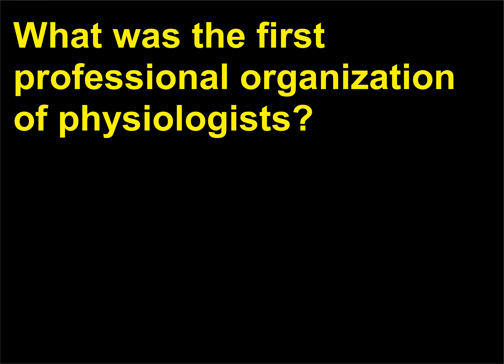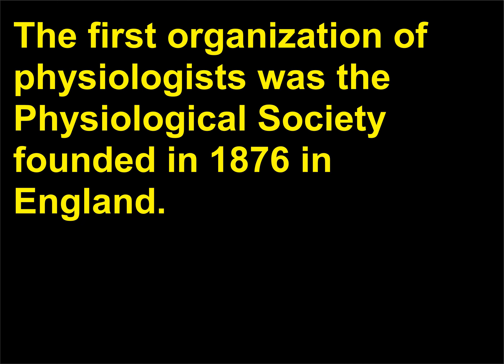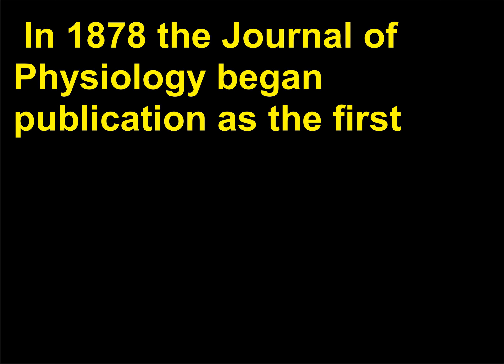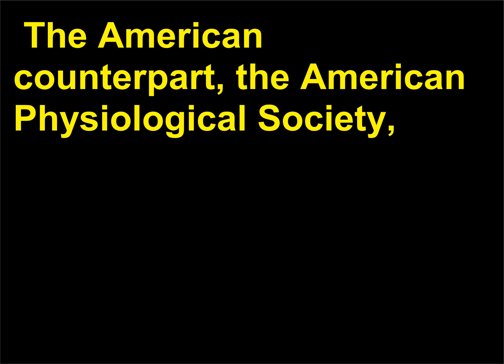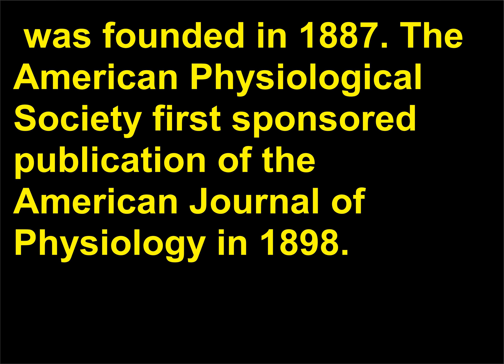What was the first professional organization of physiologists? The first organization of physiologists was the Physiological Society, founded in 1876 in England. In 1878 the Journal of Physiology began publication as the first journal dedicated to reporting results of research in physiology. The American counterpart, the American Physiological Society, was founded in 1887 and first sponsored publication of the American Journal of Physiology in 1898.